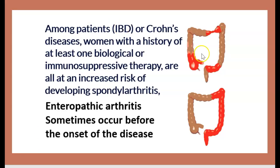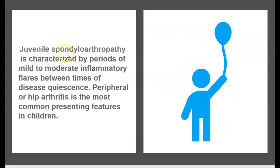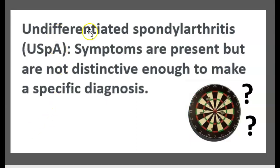Among patients with IBD or Crohn's disease, women with a history of at least one biological or immunosuppressive therapy are at increased risk for developing spondylitis. Enteropathic arthritis sometimes occurs before the onset of IBD. Juvenile spondyloarthropathy is characterized by mild to moderate inflammation with flares, and peripheral or hip arthritis is the most common presentation in children. Undifferentiated spondyloarthritis refers to cases where symptoms are present but not distinctive enough to make a specific diagnosis.